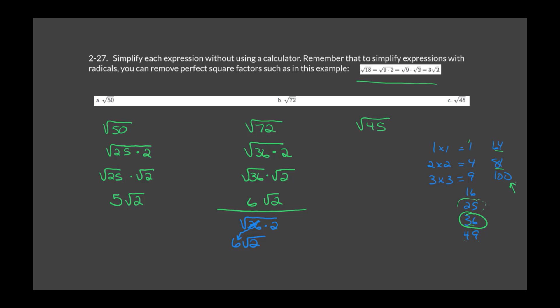For the square root of 45: looking for the highest perfect square factor — 36 doesn't work, but 9 does (9 times 5 equals 45). So the square root of 9 times 5 equals 3 root 5. Take out the 3 (square root of 9), leave the 5 under the radical. Final answer: 3 root 5.